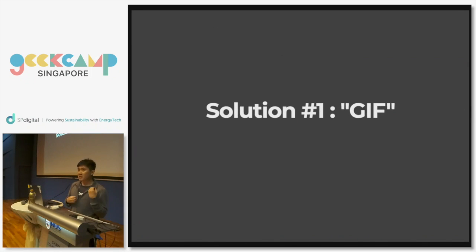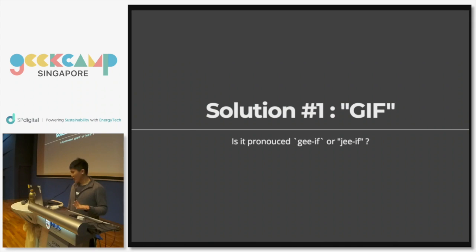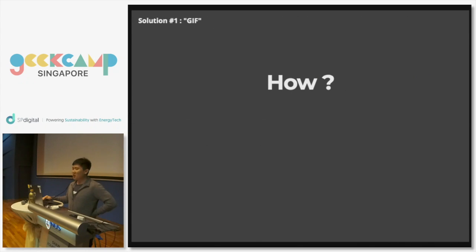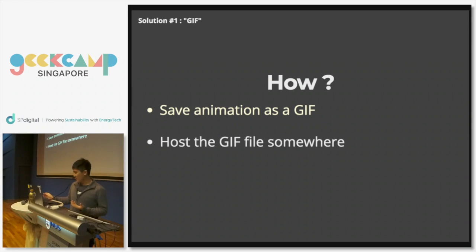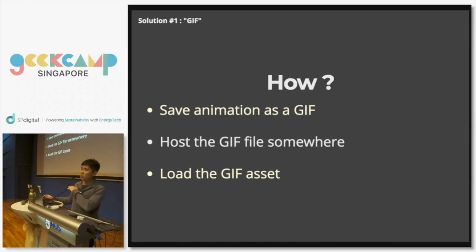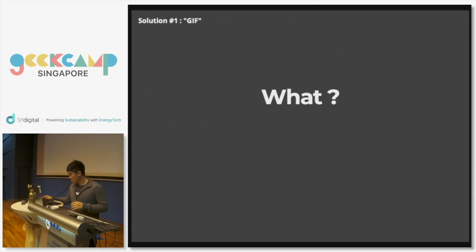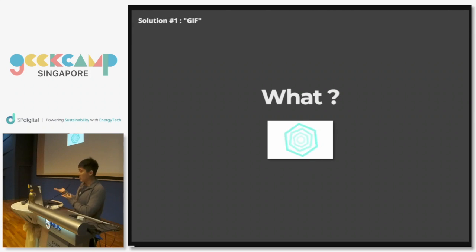The first and most simple solution: if you have an animation like that, why not create a GIF and just load it on your web page? How do you use a GIF within a web application? You create the GIF first, host it somewhere, then put the URL inside your web page inside an image tag, and that's it. Because I'm hosting my slides on the web page, this is the same effect as linking the image within these slides.